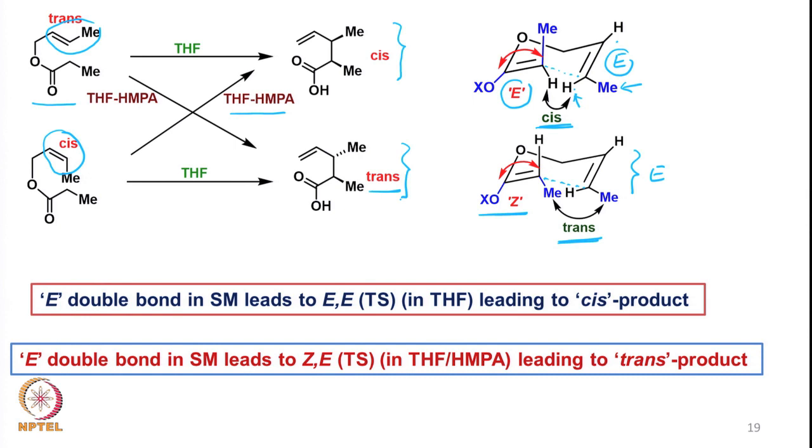It is very clear that with various kinds of product distribution, different stereochemistry of the double bond and different solvent systems allow us to expect specific cis or trans orientations of the substituents in the product. We have to understand why THF versus THF/HMPA helps to make this particular enolate cis, trans, E, or Z.